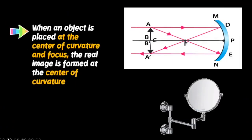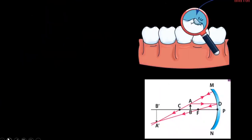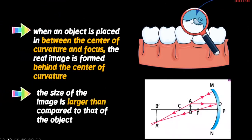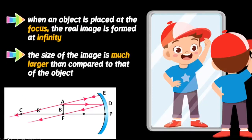When an object is placed at the center of curvature, a real image is formed at the center of curvature, and the size of the image is larger than compared to that of the object. When an object is placed between the center of curvature and the focus, a real image is formed behind the center of curvature, and the size of the image is larger than compared to that of the object. When an object is placed at the focus, the real image is formed at infinity, and the size of the image is much larger than compared to that of the object.